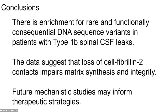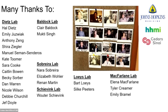In conclusion, there is enrichment for rare and functionally consequential DNA sequence variants in patients with type 1b spinal CSF leaks, and our data taken together suggest that loss of cell-fibrillin 2 contacts impairs matrix synthesis and integrity. There are obviously future studies we need to do that could inform therapeutic strategies. A lot of people were involved in this work, and thank you very much for your time.